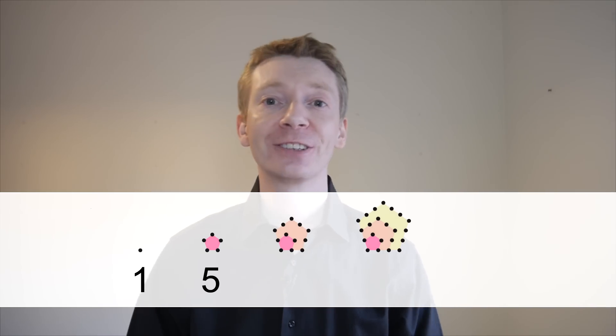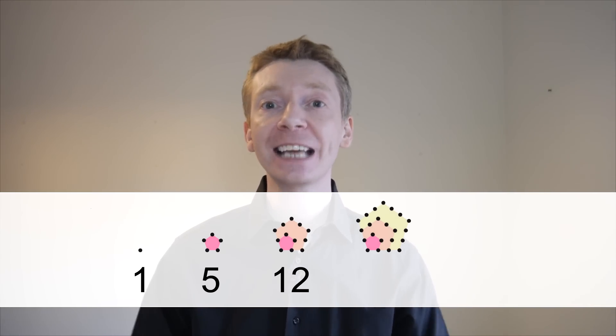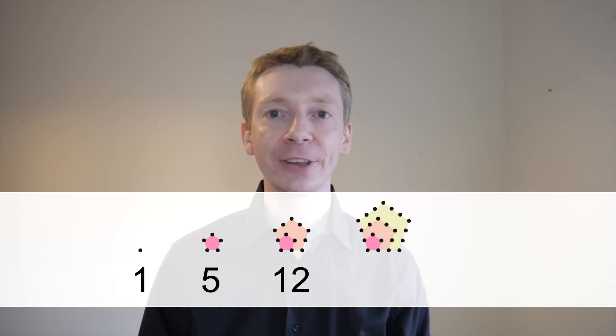The first pentagonal number is one, because it has one dot in it. The second pentagonal number is a pentagon of side length two, and that has five dots in it. The third pentagonal number has 12 dots in it, and it's two pentagons, one nested inside the other.